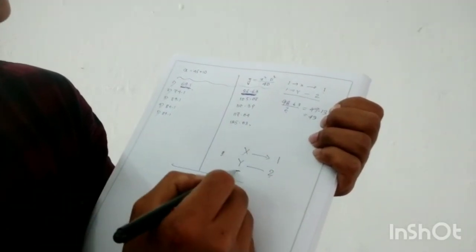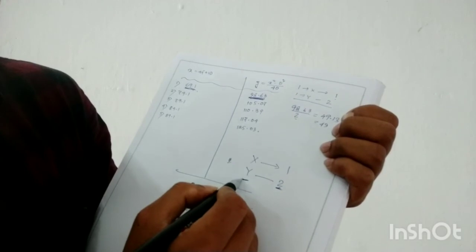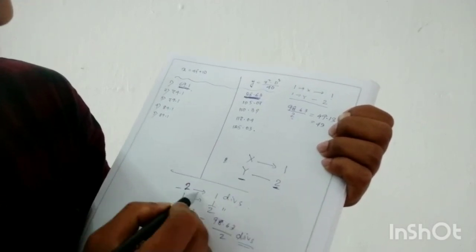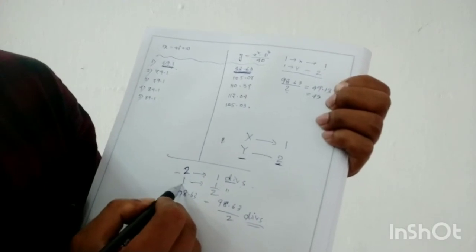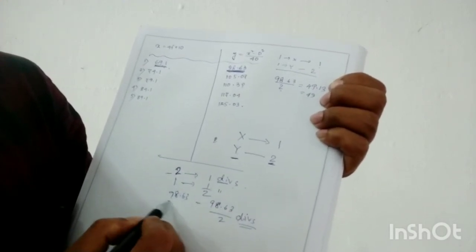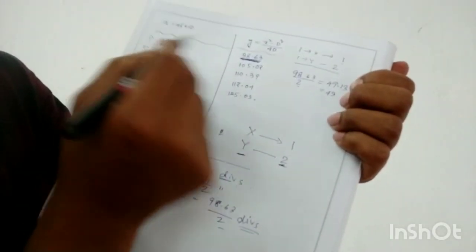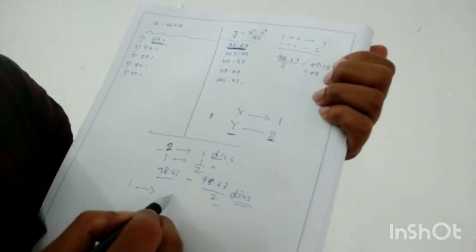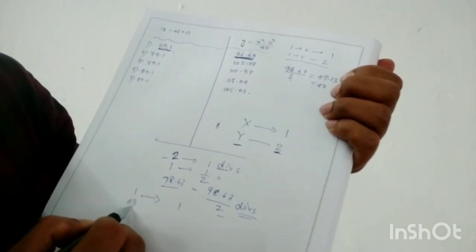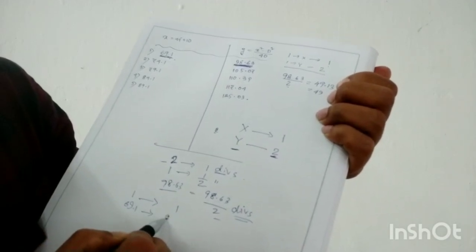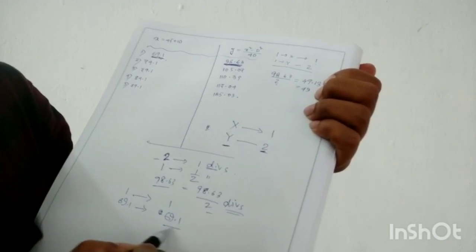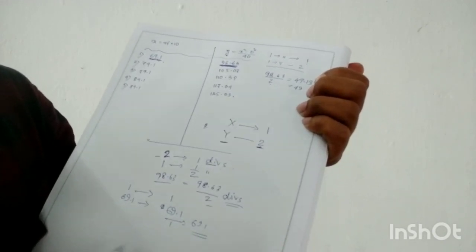To summarize: when the value is 2, the division is 1. When the value is 1, the division is 1/2. When the value is 98.63, the division is 98.63 divided by 2. Along the x-axis, since 1 unit equals 1 division, 69.1 units equals 69.1 divisions. This is the process of how to plot the graph. I hope you understood — if not, please leave a comment. Bye!